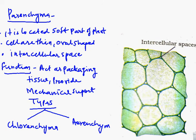Parenchyma is a simple supportive tissue located in the soft parts of plants. Its cells are thin and oval-shaped with intercellular spaces. Its main functions are to act as a packaging tissue and to provide mechanical support. Parenchyma is further divided into two types: chlorenchyma and aerenchyma. Chlorenchyma contains chlorophyll that helps in photosynthesis. Aerenchyma is found in aquatic plants and has air cavities filled with air, which help in buoyancy.